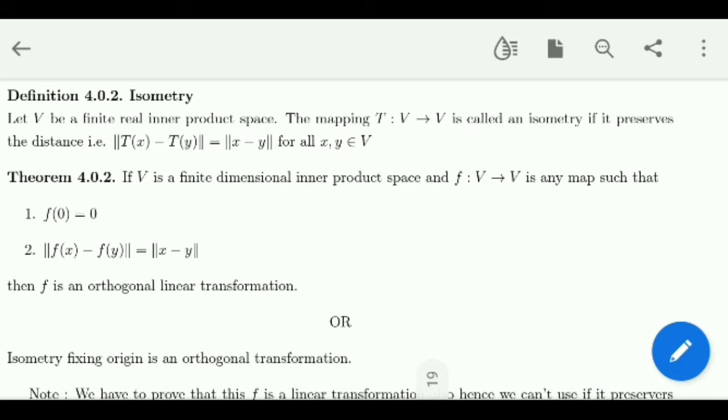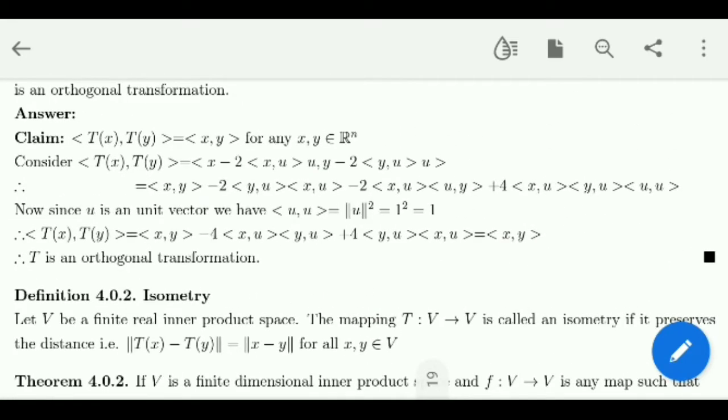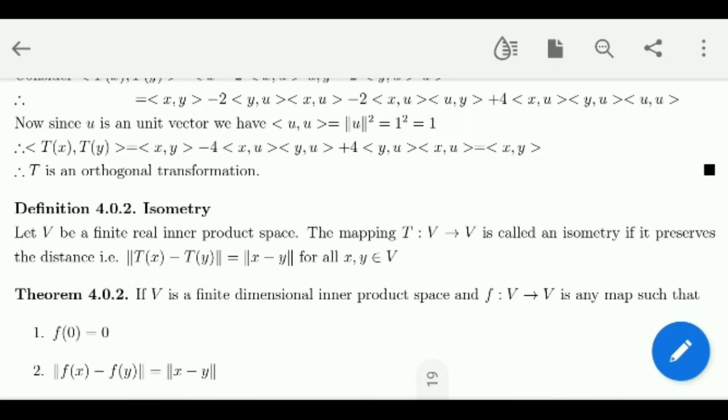If I want to say it preserves distance, norm of x minus y is same as norm of T(x) minus T(y). If I consider two vectors inside V and find out their distance, after applying T, if I find out their distance again, the answer will be same. So this is the definition of an isometry.